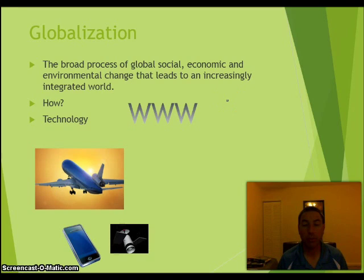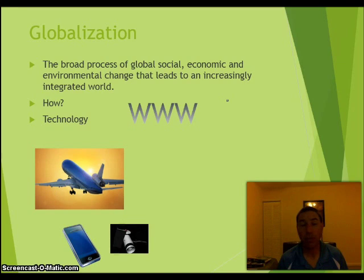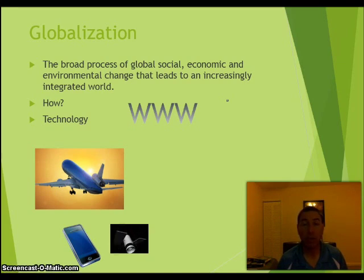So what is globalization? Basically, it's how people across the world are getting together for social, economic, and environmental changes, and this leads to an ever increasingly integrated world. We're basically getting rid of borders through globalization. It happens through trade, through sharing of ideas, and with companies. Companies all over the world buy and have offices throughout the world, so the world is becoming increasingly more global rather than individualized.